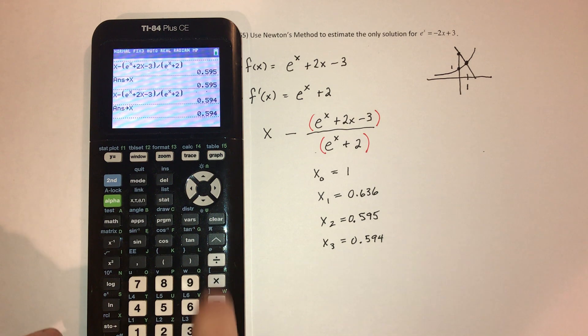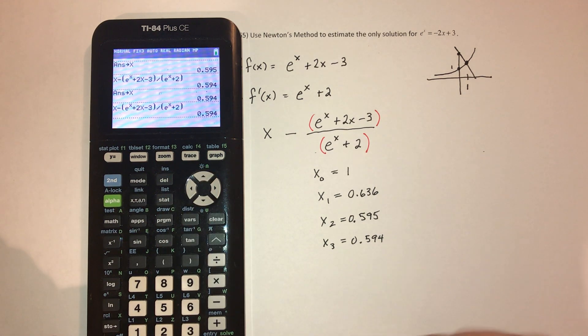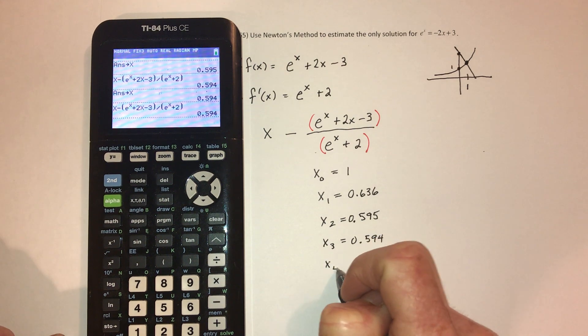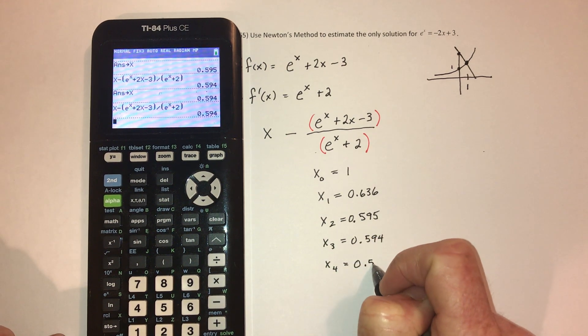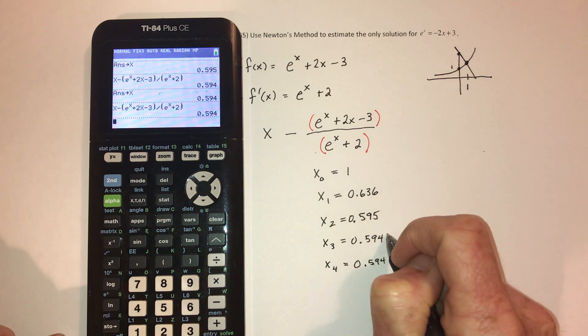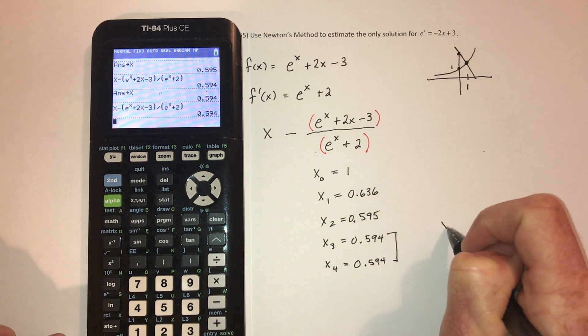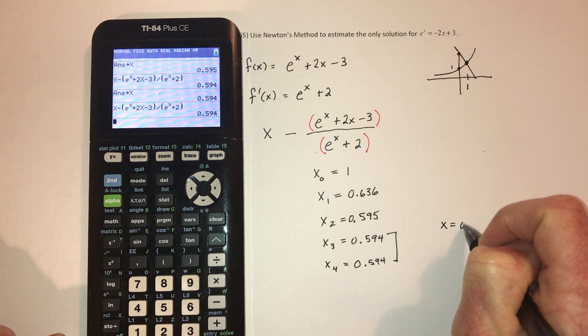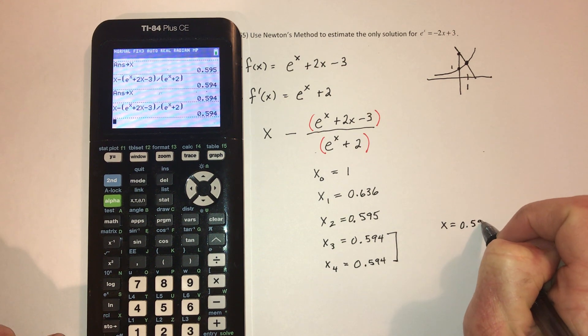And the next time we do it, we should get the same answer. Yep. So that's it. It is a 0.594. So as soon as you get it twice in a row, then that's going to be the answer. x equals 0.594.